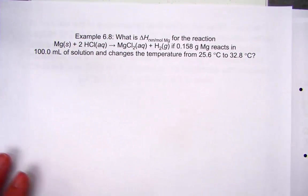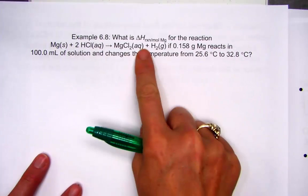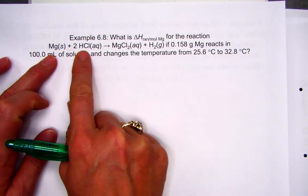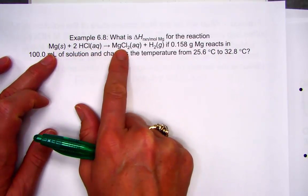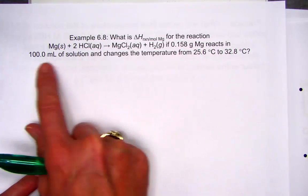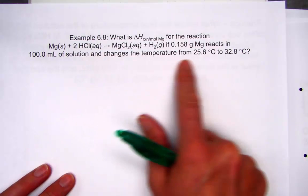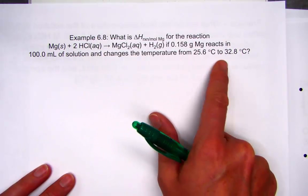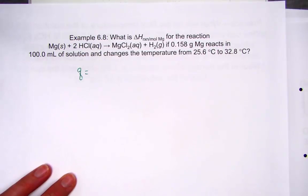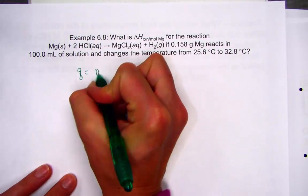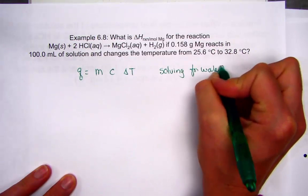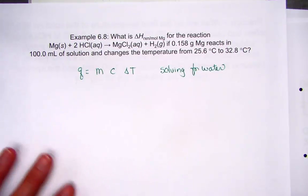We're on slide 29. What is the delta H of a reaction in moles of magnesium? Magnesium solid is placed into aqueous hydrochloric acid, producing magnesium chloride aqueous and hydrogen gas. The given is 0.158 grams of magnesium placed into 100 milliliters of solution. The temperature changes from 25.6 to 32.8 degrees Celsius. Let's first solve for the heat being absorbed by the water using Q = MC delta T.